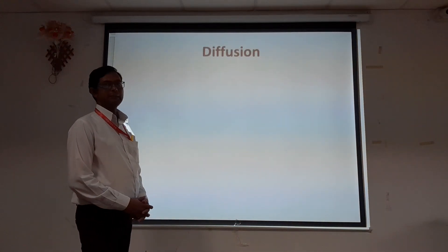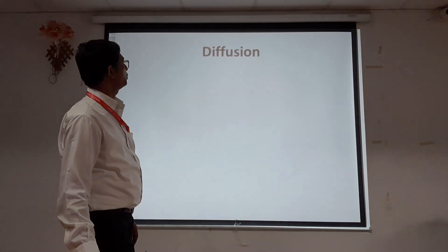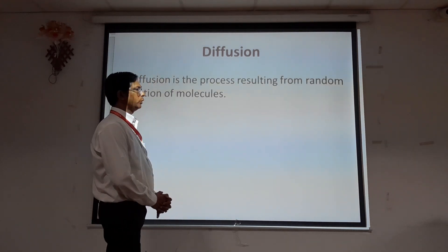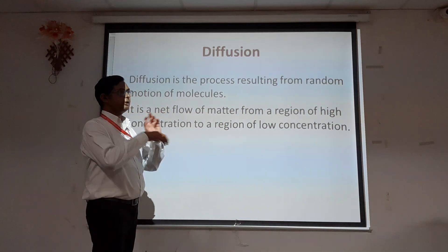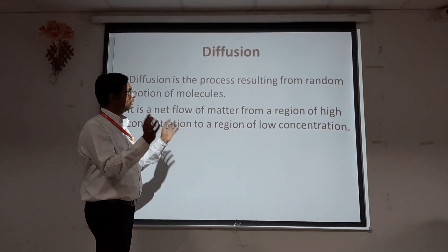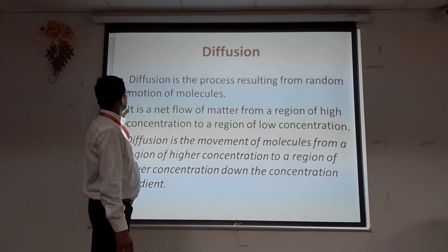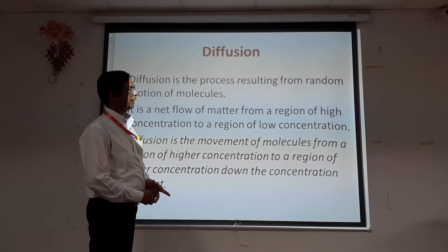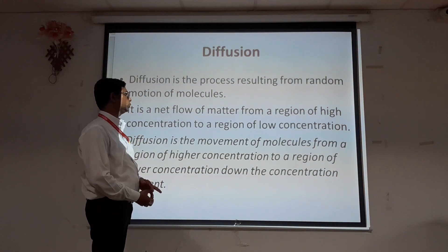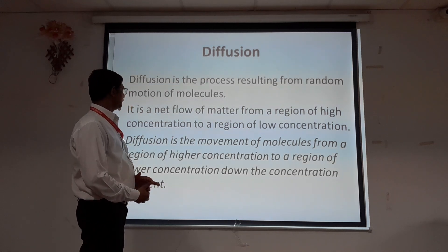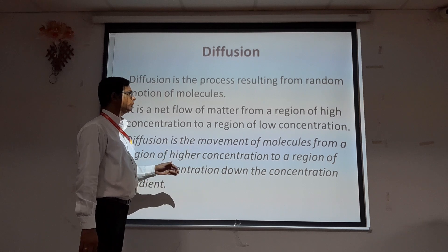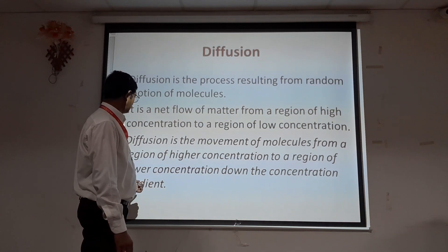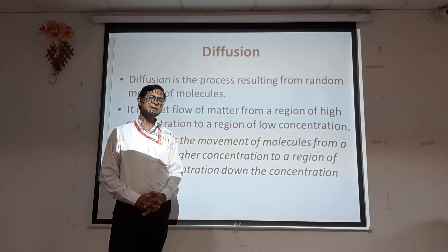The first process is diffusion. Diffusion is the process resulting from random motion of molecules — molecules which move in a random motion. It is also defined as the net flow of matter from a region of high concentration to a region of low concentration, down the concentration gradient.